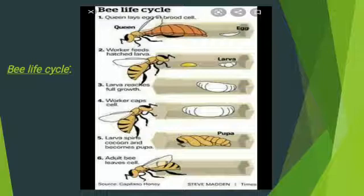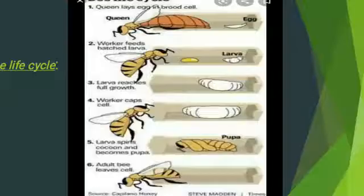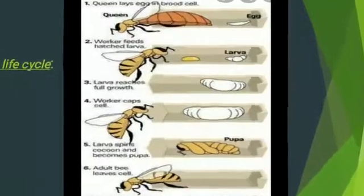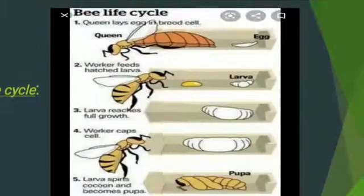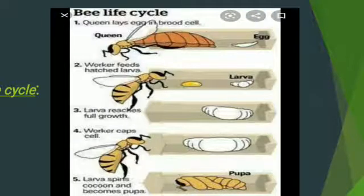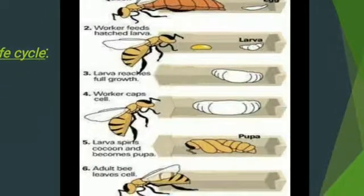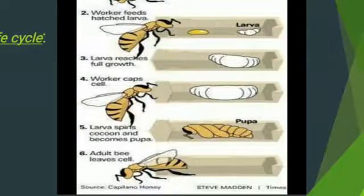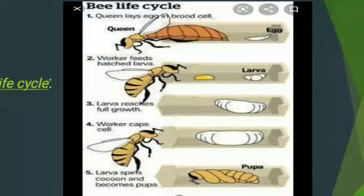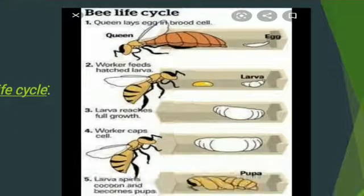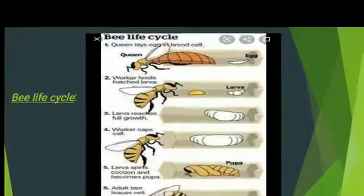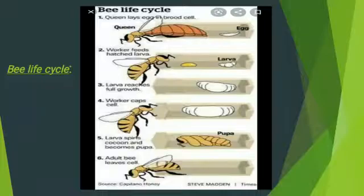Next is the bee life cycle. First, a queen lays an egg. As shown in this diagram, the egg forms a larva, which changes into a pupa, and then into an adult. This adult can again become a queen, and the cycle continuously repeats.